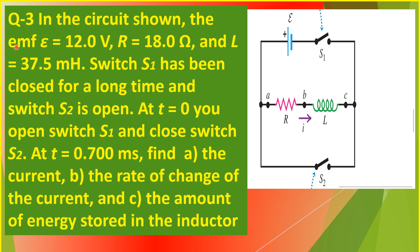Question number 3, our last question. In the circuit shown, epsilon equals 12.0 volts, resistance R equals 18.0 ohms, and inductance L equals 37.5 milli-henry. Switch S1 has been closed for a long time and switch S2 is open. At time equals zero, you open switch S1 and close switch S2. At time equals 0.700 millisecond, find: A — the current; B — the rate of change of the current; and C — the amount of energy stored in the inductor.